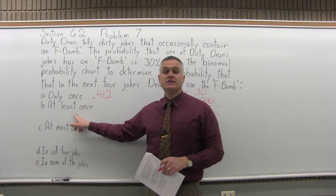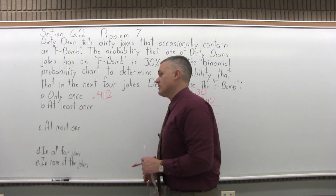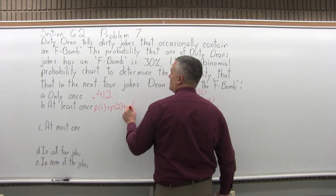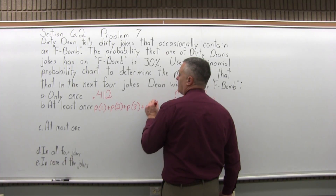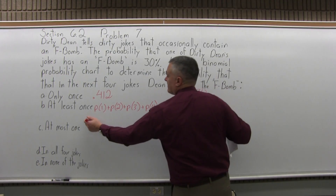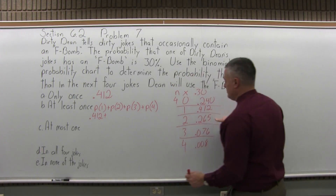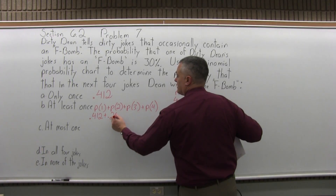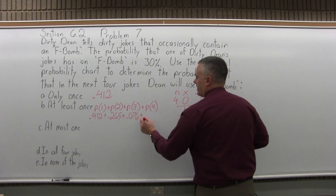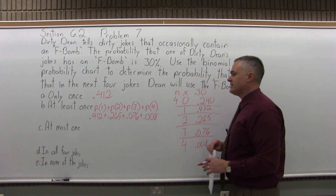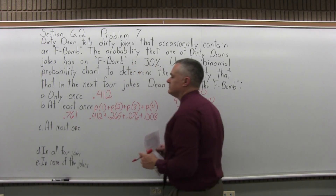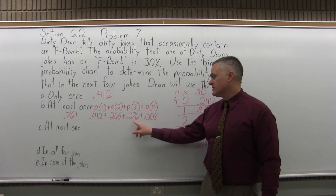At least once means once is the least — it's one joke or more. So that would be the probability for one, plus the probability for two, plus the probability for three, plus the probability for all four. From our chart: for one is 0.412, for two is 0.265, for three is 0.076, and for four is 0.008. If you add all that up, it adds up to 0.761.